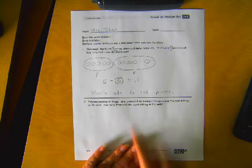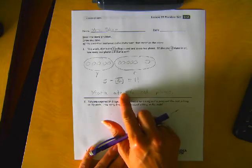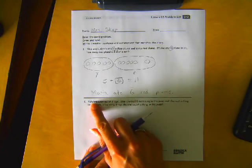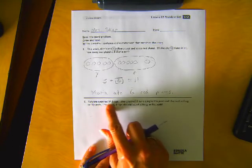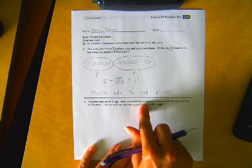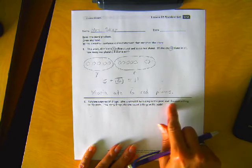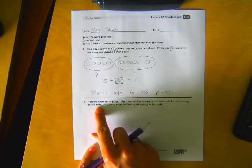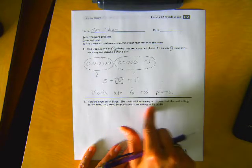Okay, if you're not done getting all this down yet, you can always hit pause. I'm moving on to number two. Tatiana counted 14 frogs. She counted eight swimming in the pond and the rest sitting on lily pads. How many frogs did she count sitting on lily pads?